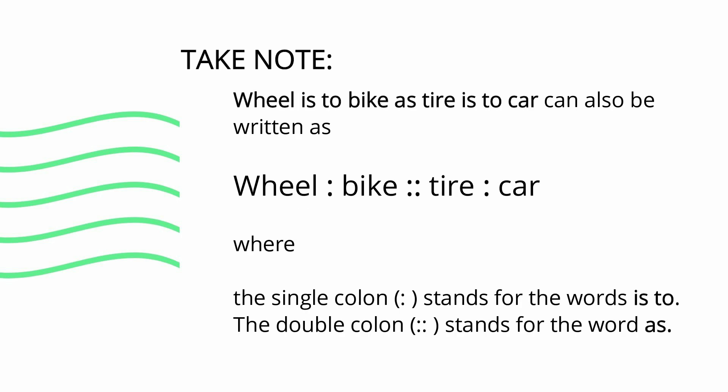Take note: wheel is to bike as tire is to car can also be written using symbols, where the single colon stands for the words is to, and the double colon stands for the word as.